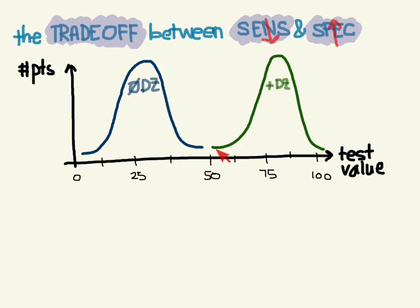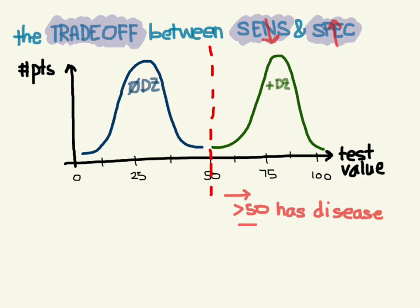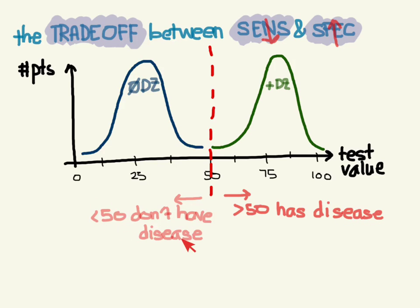The disease distribution goes as low as about 55 and almost up to 100. So if we had to pick a level above which patients do have the disease and below which they don't, in this case it's pretty easy — you set the cutoff at 50. Values greater than 50, those patients have the disease; values less than 50, they don't. This would be a pretty good test because pretty much everyone who tests positive has the disease, and pretty much everyone who tests negative doesn't.